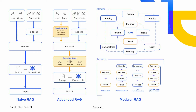Advanced RAG has the same three steps but uses advanced optimization strategies for both pre-retrieval and post-retrieval. In reality, you can't use the query as-is — you might need to figure out where to route the query, rewrite the query, or expand the query. Similarly, in the post-retrieval stages, you might need to re-rank some of the results, or do some sort of summarization or fusion.